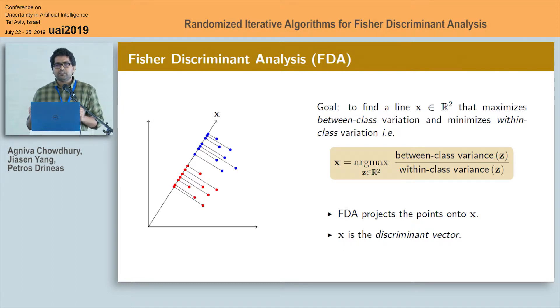In other words, we want to find a line X such that if we project these data points onto X, then the variability of these projected points between the classes is maximum and the variability within each class is minimum.